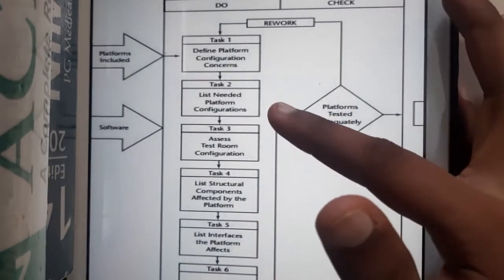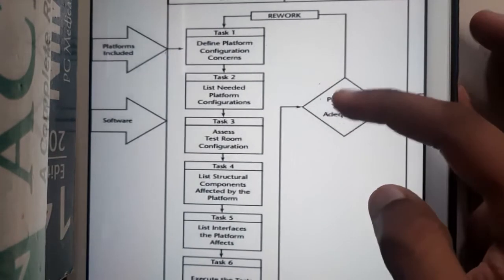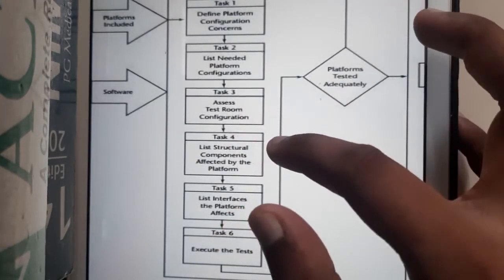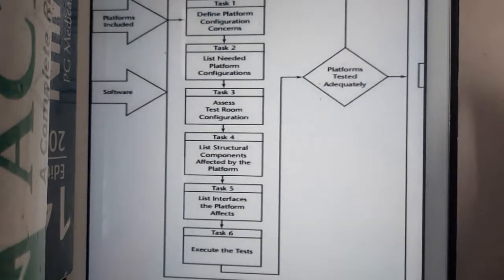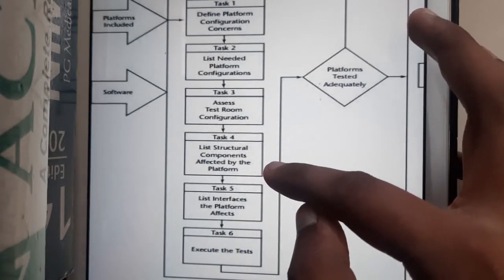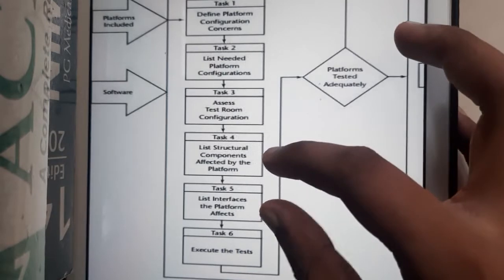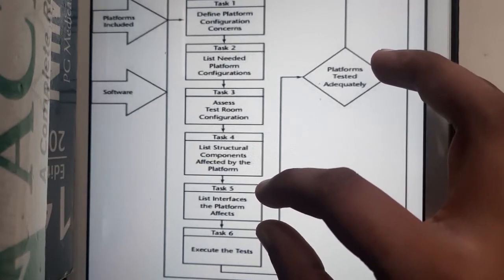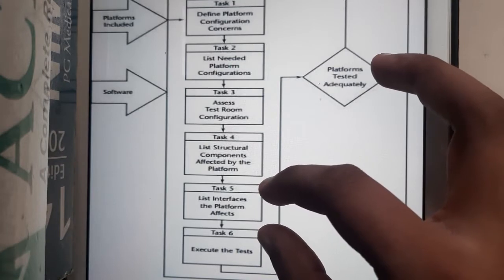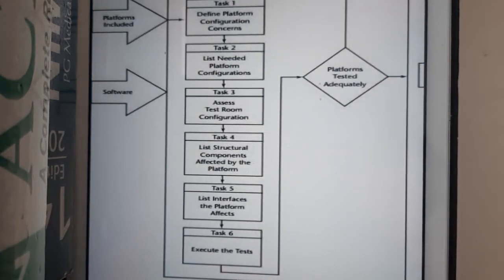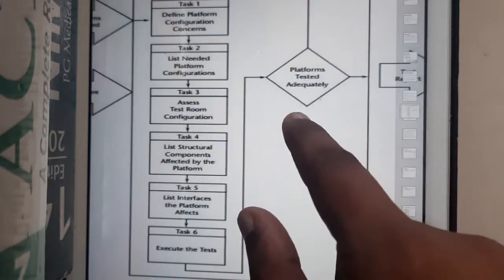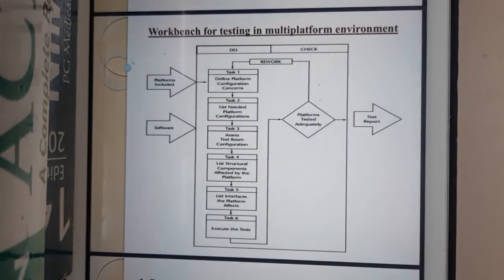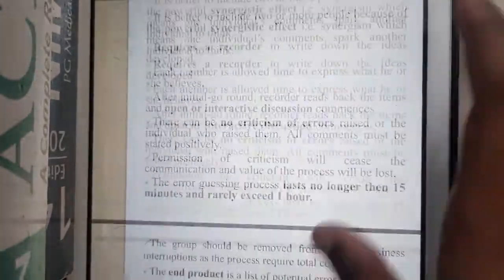Task one is to define platform configuration concerns — basically, on which platform you want to test. Task two is to list needed platform configurations — any required configurations for that operating system. Task three is to access the test room configuration — who can access the test tools. Task four is to list structural components affected by the platform. Task five is to list interfaces the platform affects. Task six is to execute the test — if everything checks out you get a positive test report, otherwise you redo the process.